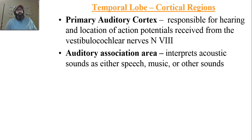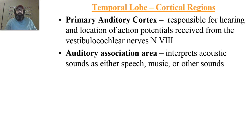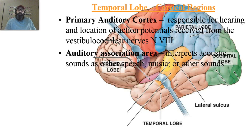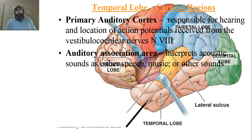Just like any other primary cortex, you also have an associated area — the auditory association area. This section takes the signals coming into the auditory cortex and interprets or processes them. Any sound is considered an acoustic sound — speech, music, or something else — and it makes sense of those sounds and routes them to the appropriate areas, such as memory formation or the prefrontal cortex for evaluating future consequences. The auditory association area surrounds the auditory cortex, shown here in orange around the yellow.